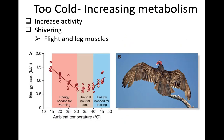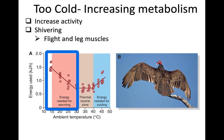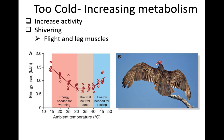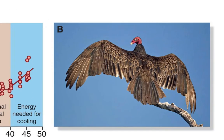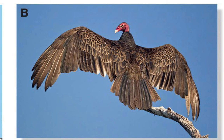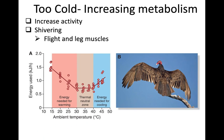If birds get too cold, they can increase their metabolism by increasing activity, which generates more body heat. They can also shiver — particularly using the large flight muscles and leg muscles — to generate increased metabolism. A more passive approach is sunning, like this turkey vulture shown perching in the sun and exposing feathers to collect radiant heat.